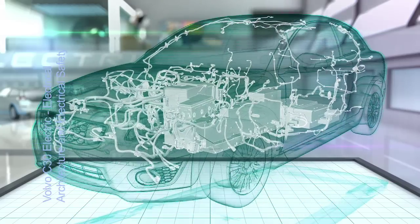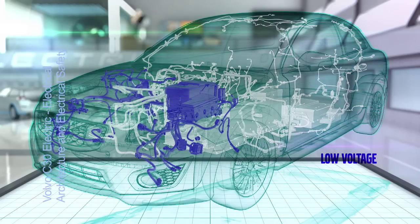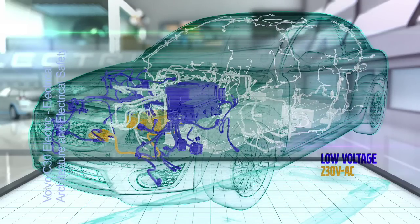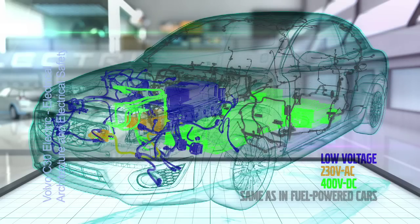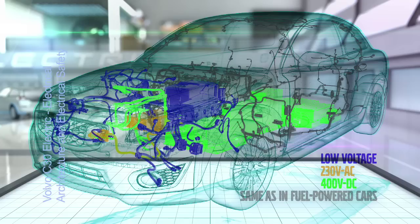The new electricity system is divided into a low voltage section and a section for 230 volt AC system and a 400 volt DC power. The grey section is the same as in today's fuel powered cars.